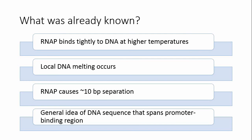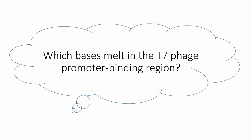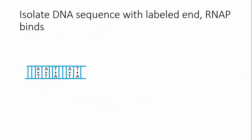This brings up the question that was investigated: Which bases melt in the T7 phage promoter binding region? To answer this question, the experimenter first isolated a DNA sequence that encompassed the promoter binding region. Again, there must have been some semblance of where this region was located so that the experimenter could isolate this specific sequence of DNA.